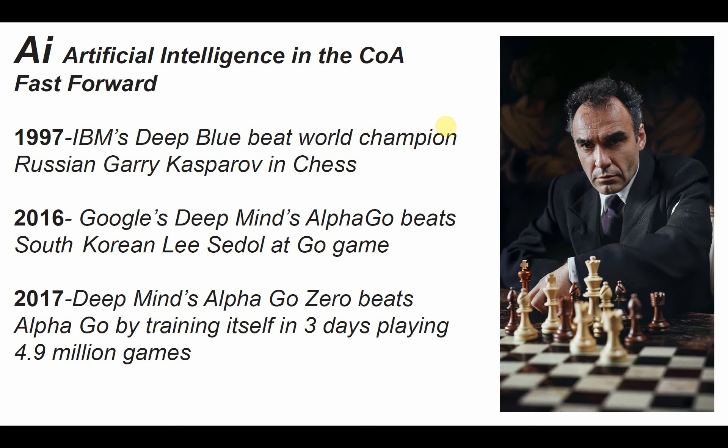Let's now look at some key moments in recent history. In 1997, most people thought the idea of a computer beating a human in anything was far-fetched. But that very thing shocked people when a computer beat chess champion Garry Kasparov in 1997. Then in 2016, a huge shock was sent through the Go-playing nations when AlphaGo beat the Korean Go champion. A year later, Google's AlphaGo Zero beat its predecessor by training itself by playing almost 5 million games against itself.